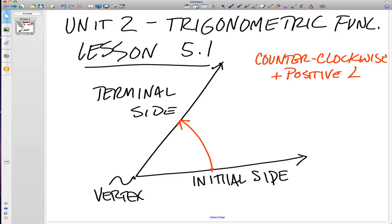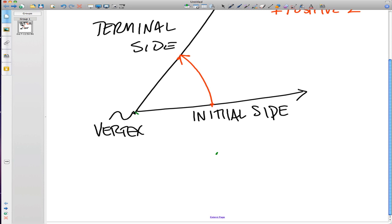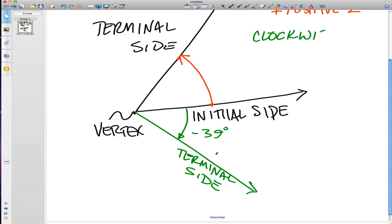If I measure in the negative direction, for instance, if I have another angle here, and this is its initial side, and I measure in that direction, that would be a negative, for instance, 39 degree angle, because this would be its terminal side. And I'm now measuring in the clockwise direction. So, clockwise results in a negative measure.